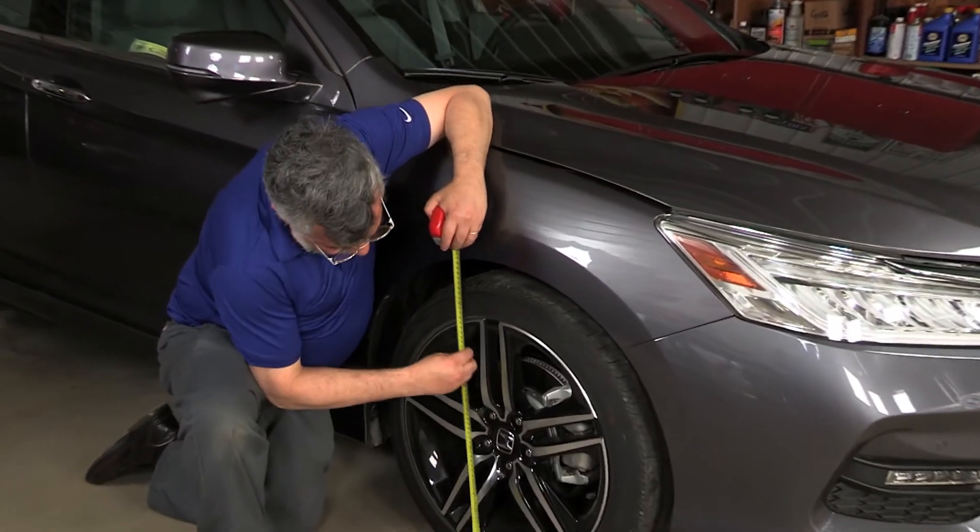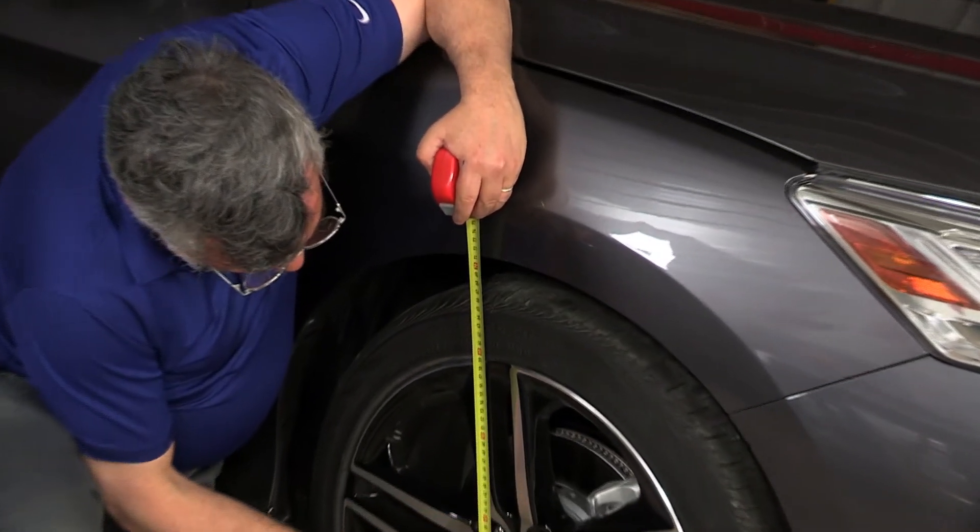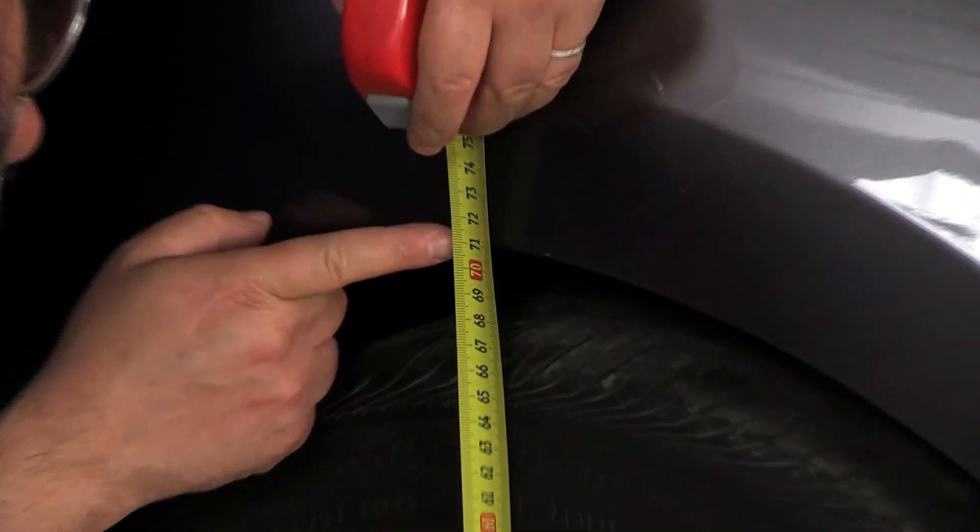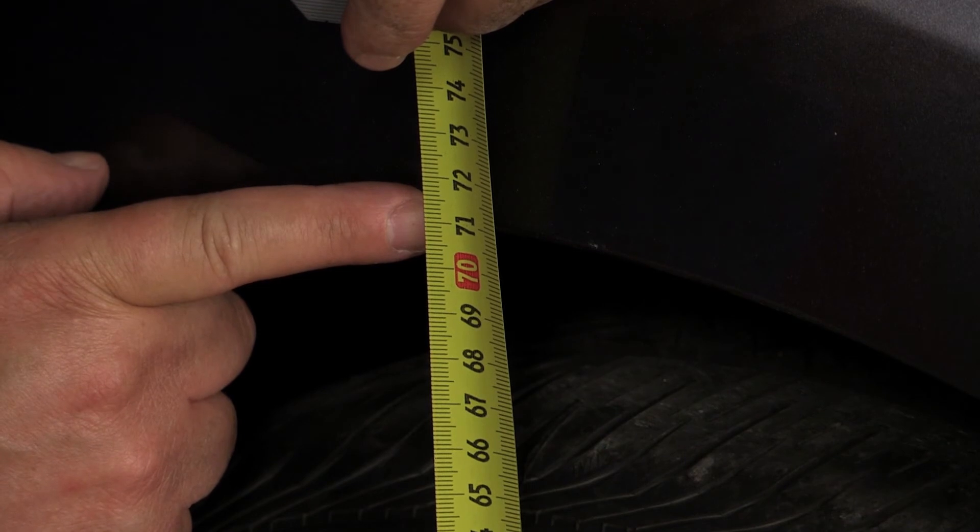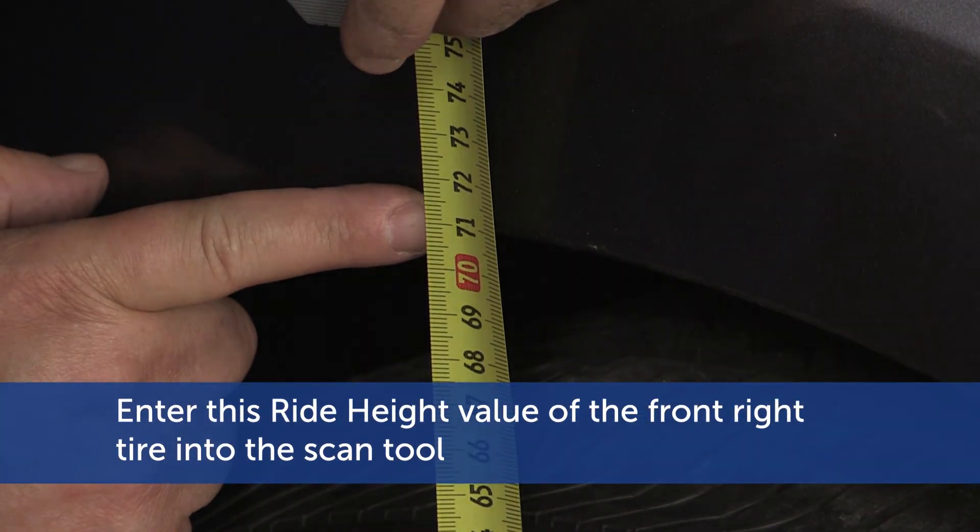We must measure the vehicle ride height. Measure the distance to the ride height with the wheel arch using a tape measure. Measure from the ground to the top of the wheel arch. The ride height you just measured will now be entered into the scan tool.